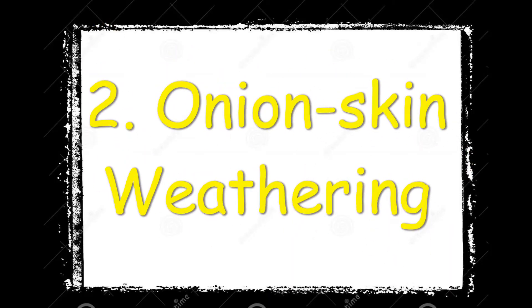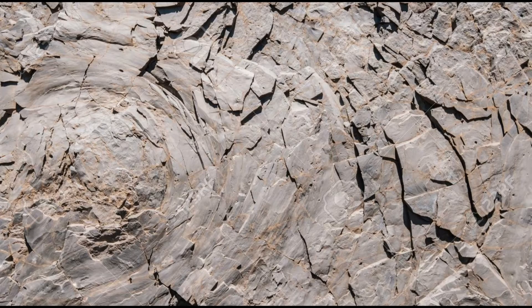Onion skin weathering happens when a rock is repeatedly heated and cooled. As it is heated, the outer layer of the rock expands slightly, and as it cools, the rock contracts. Continual expansion and contraction causes small pieces of the rock surface to peel off like the skin of an onion. This is what we call onion skin weathering.